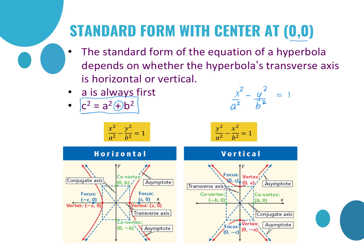Another difference from an ellipse is that in an ellipse, A² always involved the larger number. But here, A² always goes under the first term — it doesn't alternate. So it's always A² under the first term. If X² is first, this is a horizontal hyperbola because the axis is on the X-axis. If Y² is first, it's a vertical hyperbola. Everything else is the same except X and Y switch places depending on the axis.